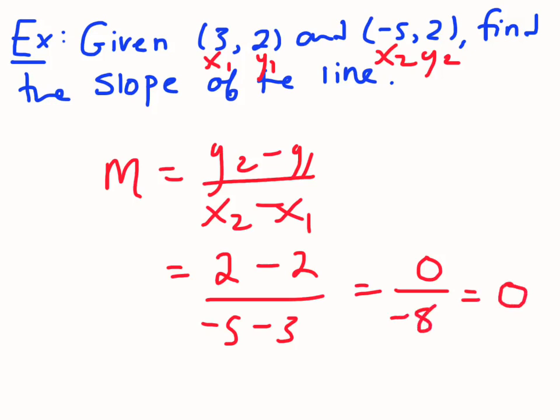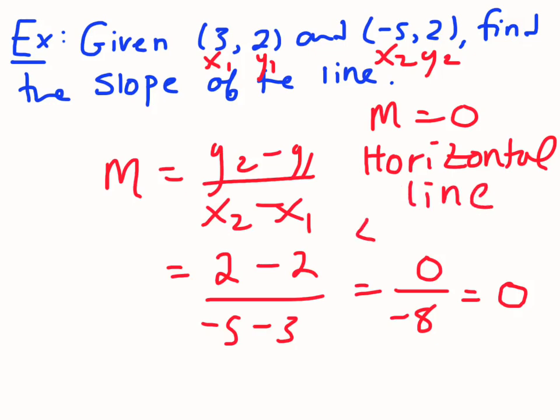So any time you have a slope of 0, this is actually a horizontal line. It's just basically a flat line, sort of like this. And its equation can actually be found by looking at the y-coordinate. So the y-coordinate of both points is the same. So the equation of this line would actually just be y equals 2.